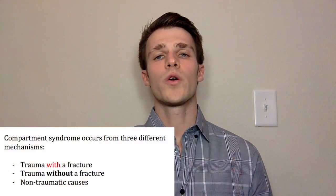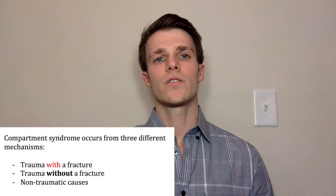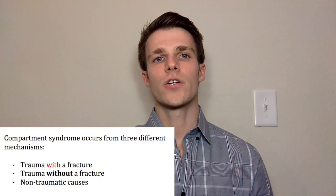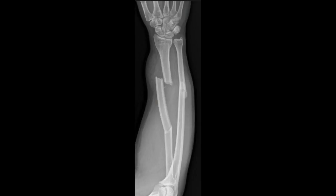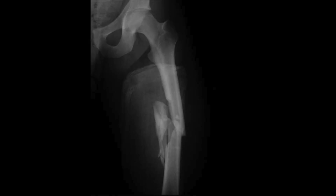Acute compartment syndrome can occur from numerous different etiologies, but it can be broken down simply into three categories: trauma with a fracture, trauma without a fracture, and non-traumatic causes. Acute compartment syndrome most often occurs — 75% of the time — after long bone fractures, and risk increases significantly with comminuted fractures. We're talking about fractures to the tibia, fibula, radius, ulna, humerus, and femur. It's important to note that tibial fractures are going to lead to compartment syndrome most frequently, and then forearm fractures.